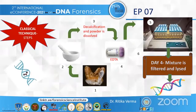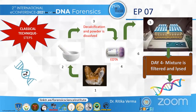In this study, the authors took 16 teeth from a single skull and divided them into two groups: Group A underwent the classical technique and Group B the new technique. For the classical technique, each tooth was pulverized using a Teflon pestle and a ceramic mortar. During decalcification, the resulting powder was dissolved in EDTA solution, and the mixture was kept under a DNA shaker for four days at room temperature to obtain DNA from the mineral matrix. After the fourth day, the mixture was filtered and lysed, and finally the DNA was obtained.